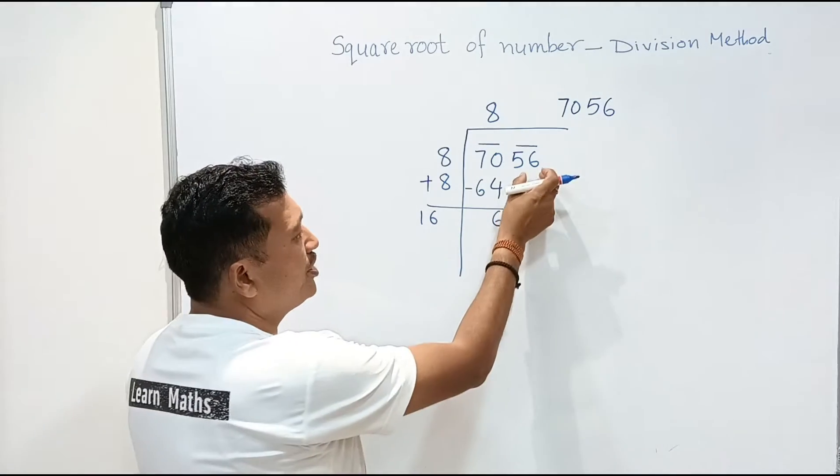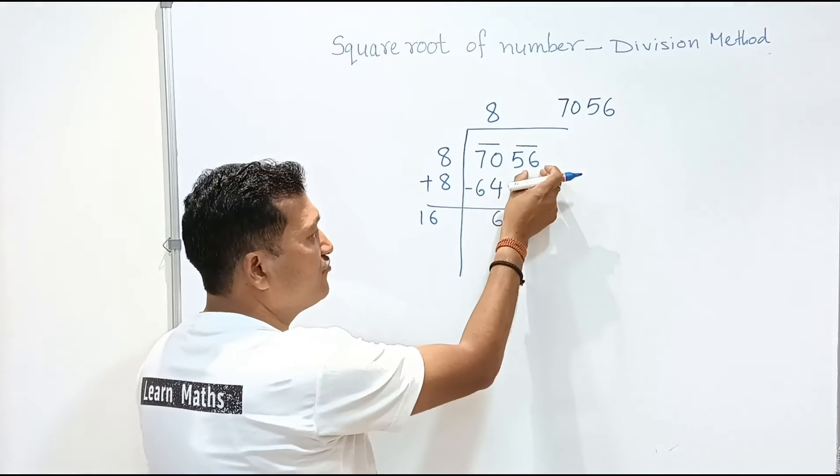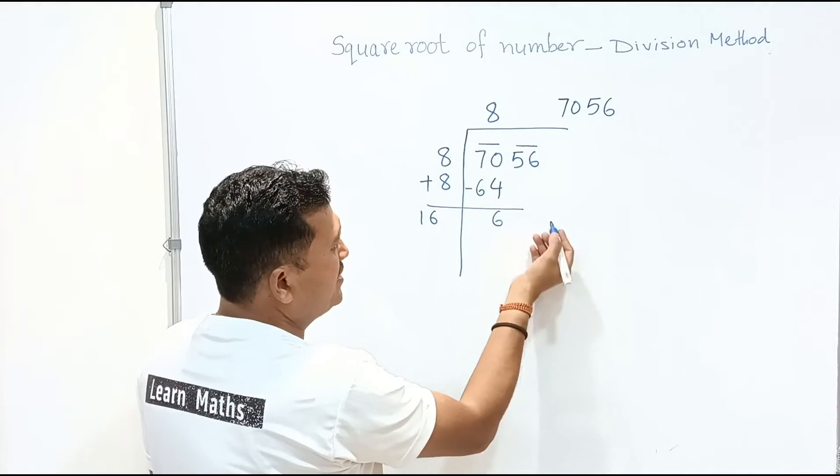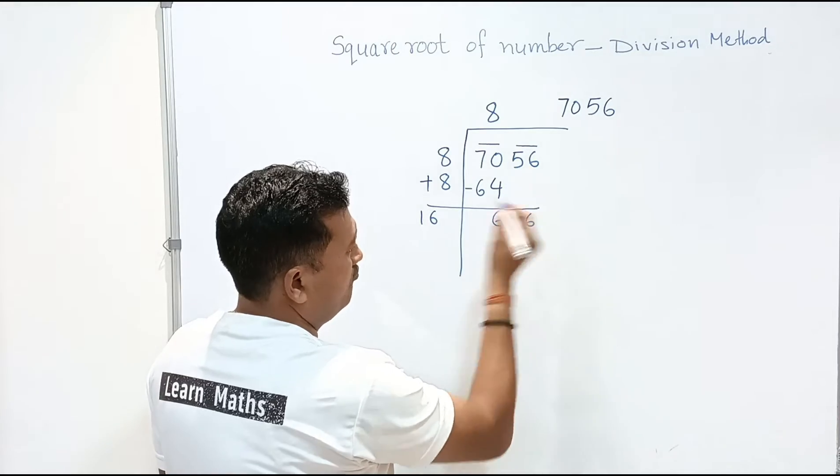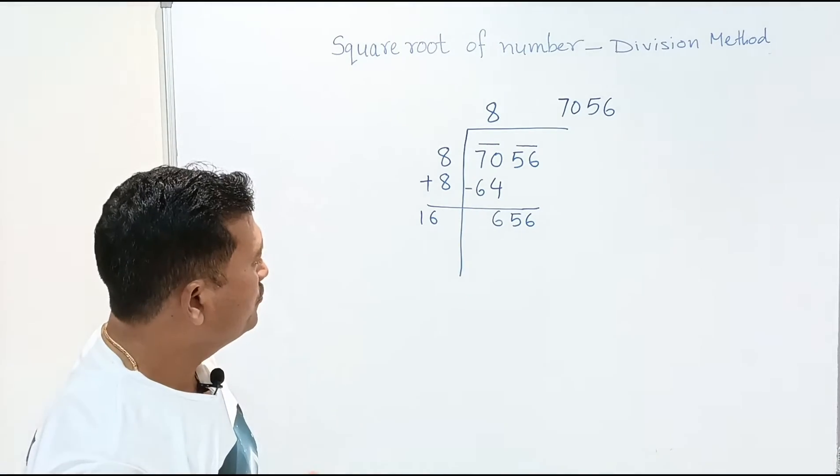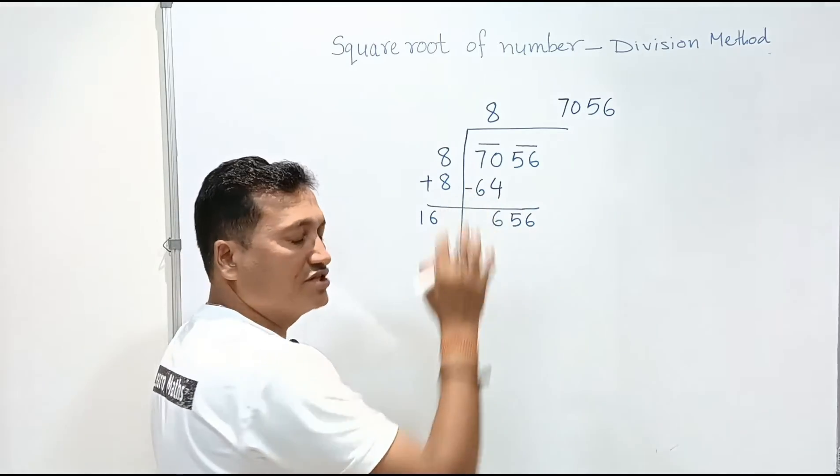Now we need to copy the next group that is 56 just beside 6 like this. Now we have to divide 656.